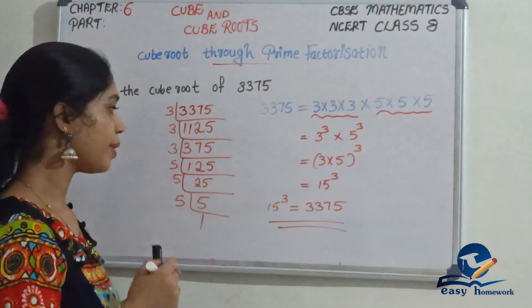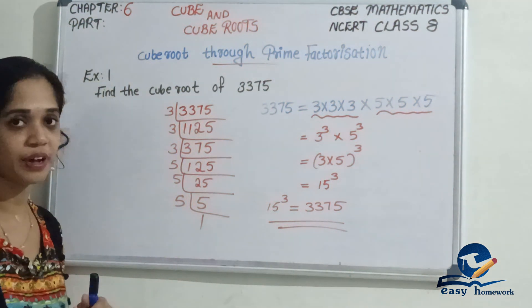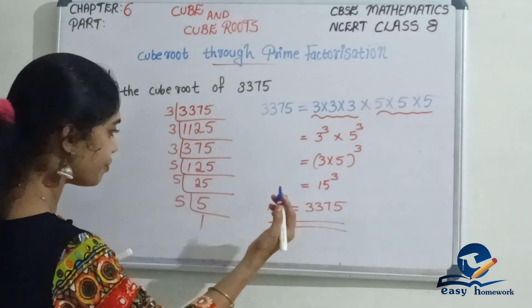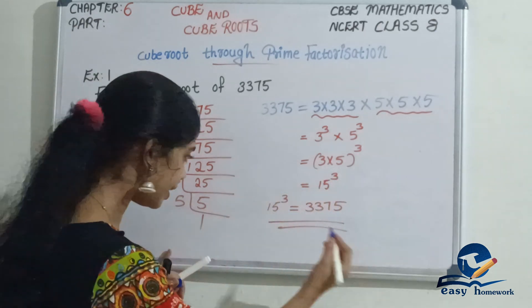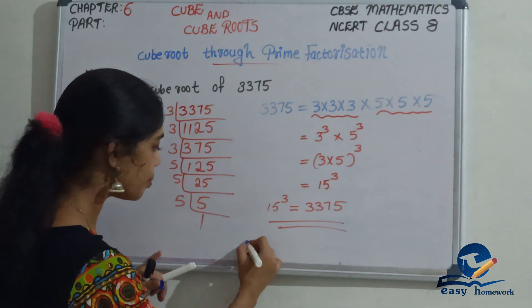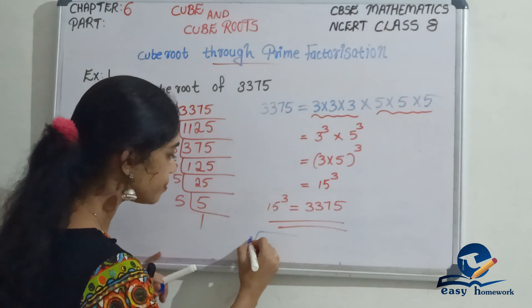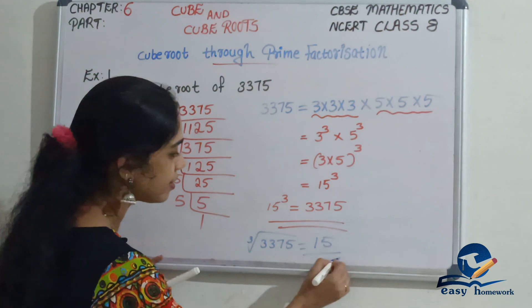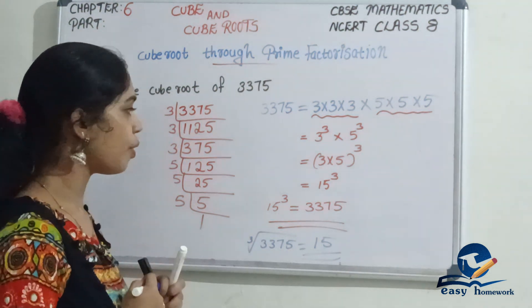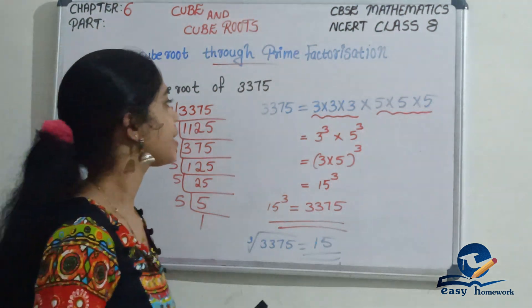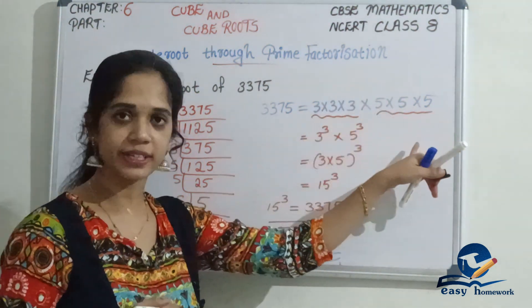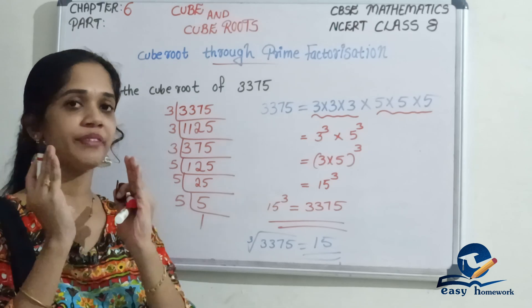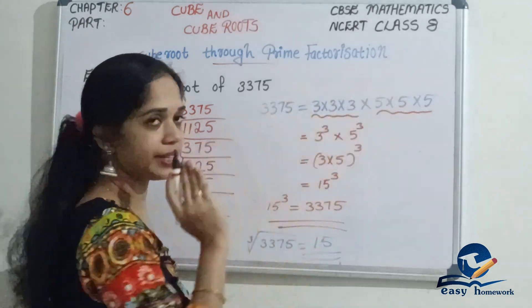Okay, so 15 cubed is equal to 3,375, and therefore the cube root of 3,375 is 15.